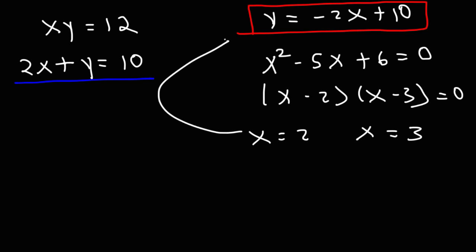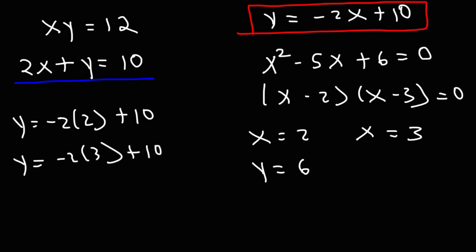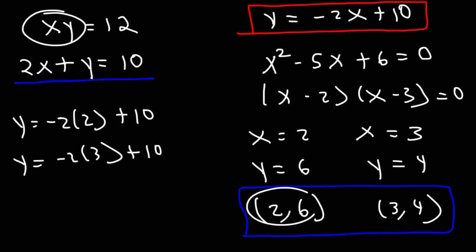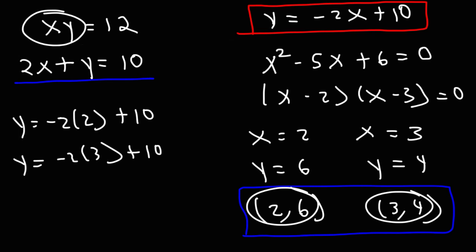Now we plug those x values into y equals negative 2x plus 10. For x equals 2: negative 4 plus 10 equals 6. For x equals 3: negative 6 plus 10 equals 4. So the two solutions are (2, 6) and (3, 4). A quick check: 2 times 6 is 12 and 3 times 4 is 12, confirming both solutions are correct.